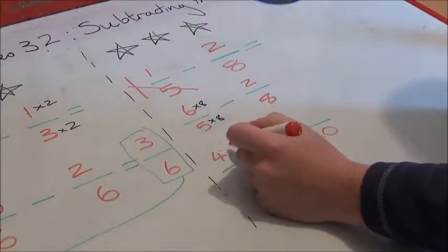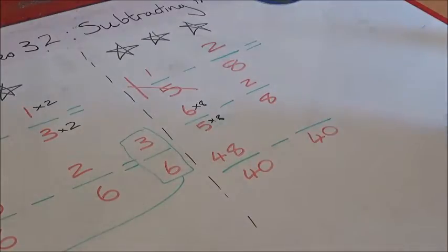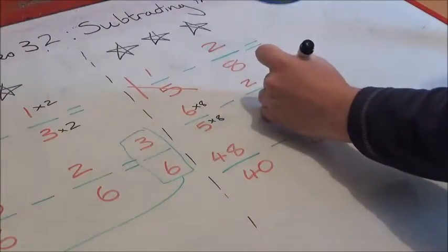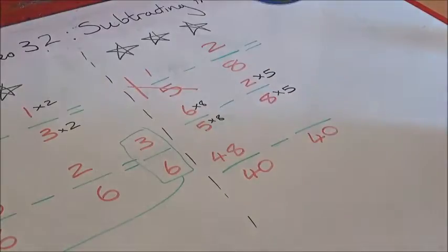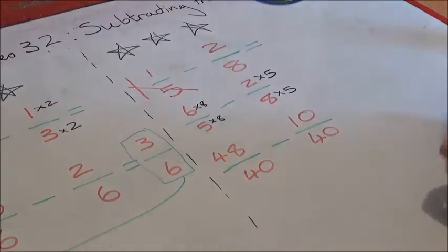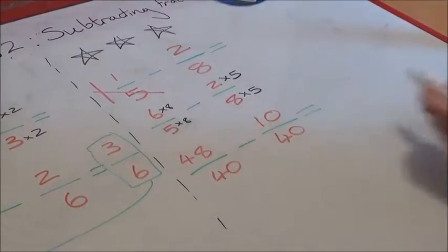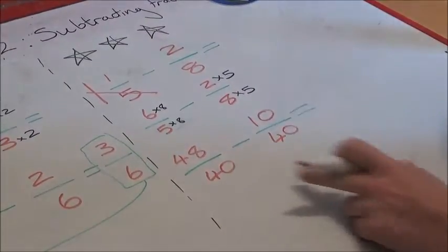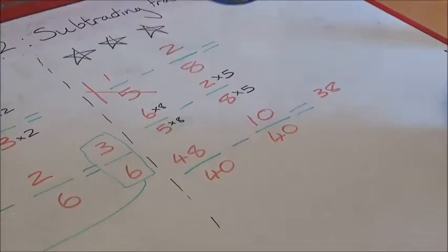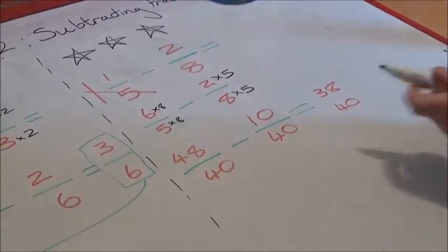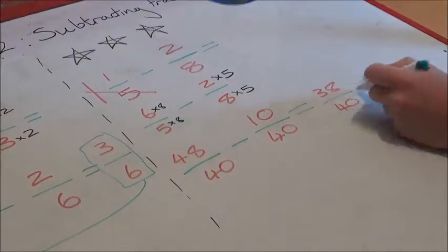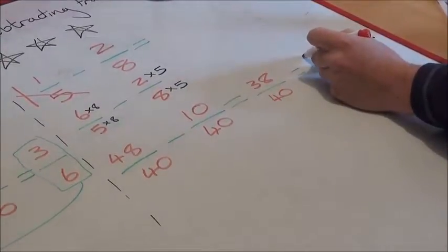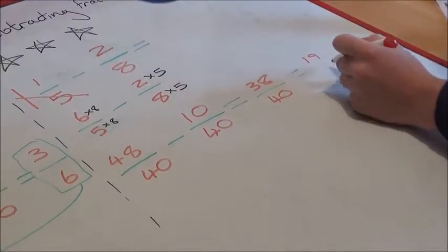And then eight into 40, I've got to times by five, which means I have to times two by five, which is ten. And then now we have the simple method of 48-40ths take away 10-40ths, which equals 38-40ths. And again, I could simplify that if I wished. I could simplify that to 19-20ths by dividing both of these by two.